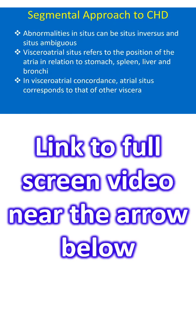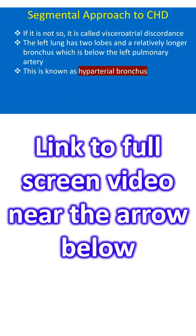Abnormalities in situs can be situs inversus and situs ambiguous. Viscero-atrial situs refers to the position of the atria in relation to the stomach, spleen, liver and bronchi. In viscero-atrial concordance, atrial situs corresponds to that of the other viscera. If it is not so, it is called viscero-atrial discordance.